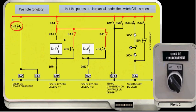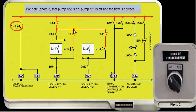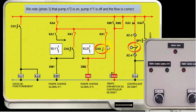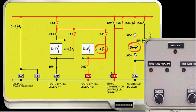We note photo 2 that the pumps are in manual mode. The switch CH1 is open. We note photo 3 that pump number 2 is on service, pump number 1 is off, and the flow is correct.